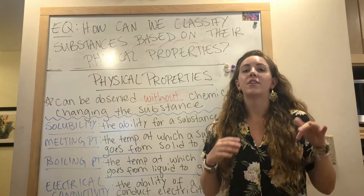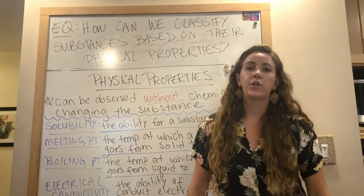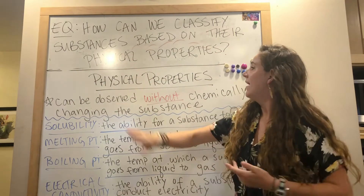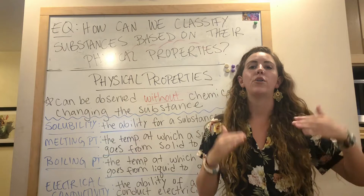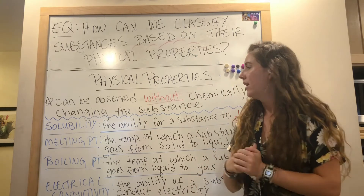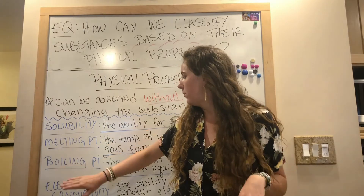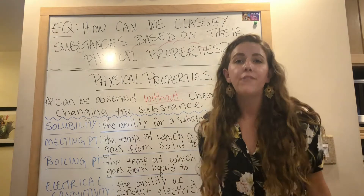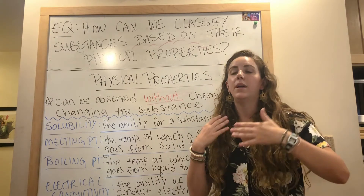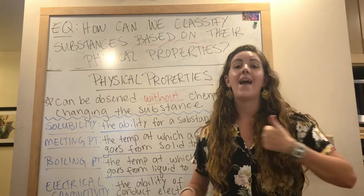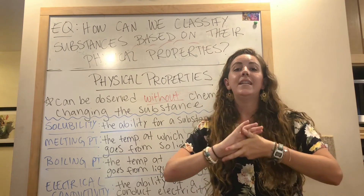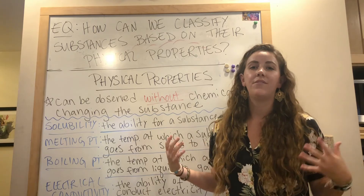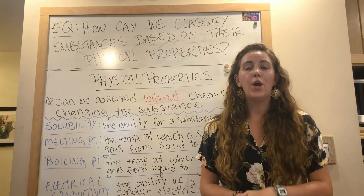Thanks for coming along with me and exploring all of these physical properties. We learned how to classify substances based on different properties we can observe without chemically changing them: solubility, melting point, boiling point, electrical conductivity, and magnetism. These aren't the only physical properties — we can also measure mass, volume, and density — but we only went over these today. I hope this clears up any confusion, and I will see you guys next time.